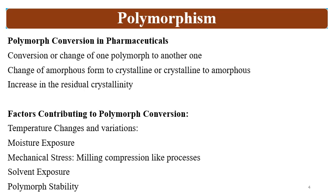Polymorph conversion is the change of one polymorph to another polymorphic form, or the change of amorphous form to crystalline form, or crystalline form to amorphous form. An increase in residual crystallinity in the amorphous form is also considered polymorph conversion. The main factors contributing to polymorph conversion are temperature changes and variation, moisture exposure, mechanical stress, solvent exposure during manufacturing processes, and polymorph stability.